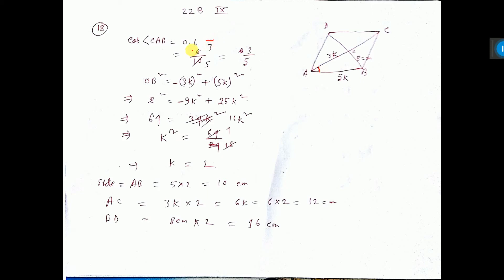Now cos means here 0.6. You remove the point, so it becomes 6/10. Do cancellation, it is coming 3 by 5.